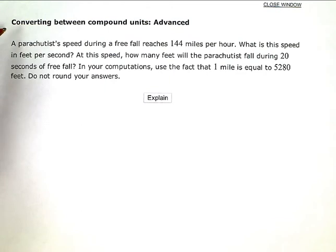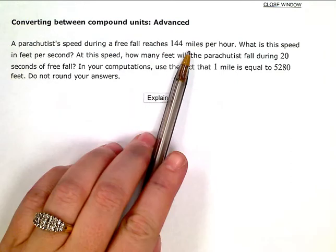Converting between compound units advanced. A parachutist's speed during free fall reaches 144 miles per hour.